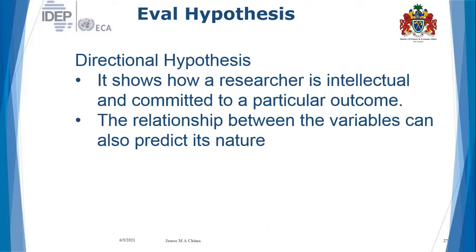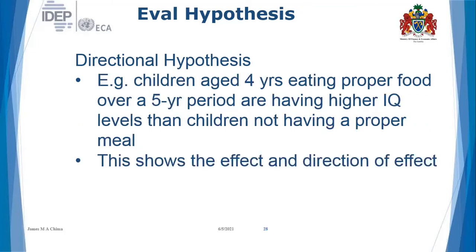A directional hypothesis shows how a researcher is intellectually committed to a particular outcome — we see the relationship between the variables predicting its nature. For example, children aged four years eating proper food over a five-year period have higher IQ levels than children not having a proper meal. What is characteristic of a directional hypothesis is that it shows the effect and the direction of effect.